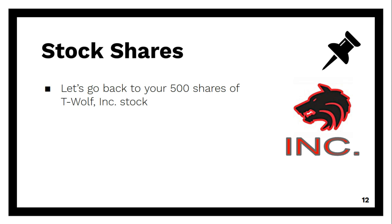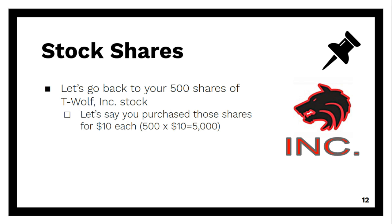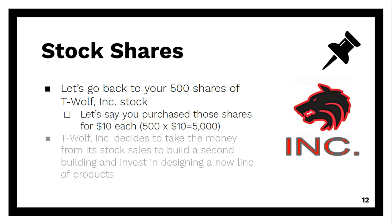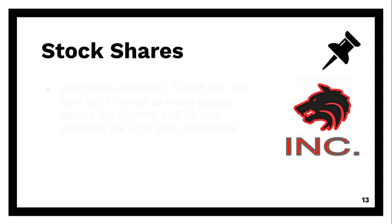So let's go back to your 500 shares of T-Wolf Incorporated stock. Let's say you purchase those shares for $10 each. 500 shares times $10 per share means that your investment was originally worth $5,000. Now, let's say that T-Wolf Inc. took your money and the rest of the money from its stock sales and decided to build a second building and put money into designing a new line of products for consumers to buy.